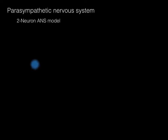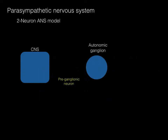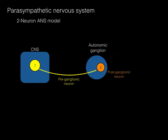So, parasympathetic nervous system — there's the two-neuron ANS model. We have a CNS origin and a peripheral autonomic ganglion. The preganglionic neuron arises in the CNS and sends its axon out to synapse in the peripheral autonomic ganglion. The postganglionic neuron — named because it's after the synapse or after the ganglion — then sends its axon out to the target organ.